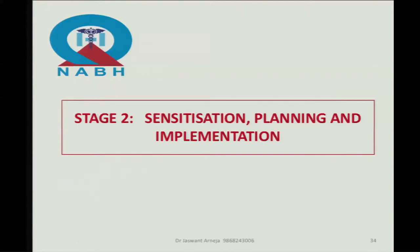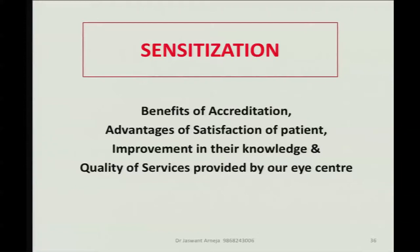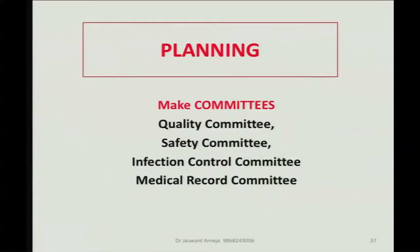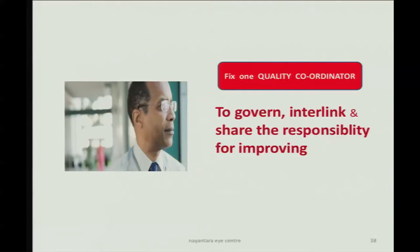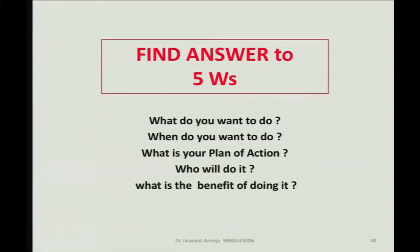The next stage is sensitization, planning, and implementation. Make your staff and team members familiar with the idea of getting NABH accreditation. All staff should know the benefits: patient satisfaction, the name of your center will rise, improvement in staff knowledge, and quality of services. Then comes planning — form committees like Quality Committee, Safety Committee, Infection Control Committee, and Medical Record Committee. Fix one quality coordinator to interlink and share responsibilities. According to Pareto's law, 80% of work is done by others and we have to do just 20%. Find the answers to the five Ws: What do you want? When do you want it? What is your plan of action? Who will do it? What is the benefit?